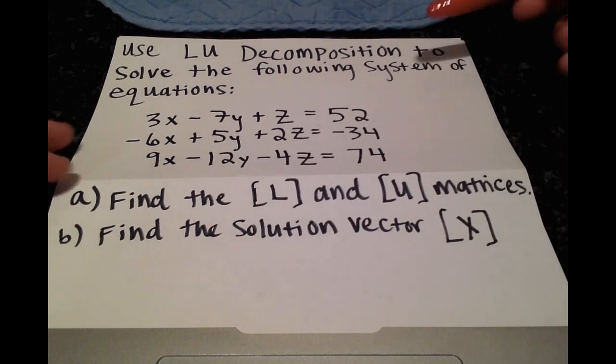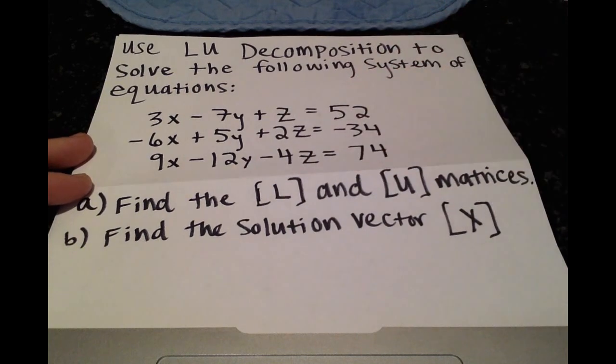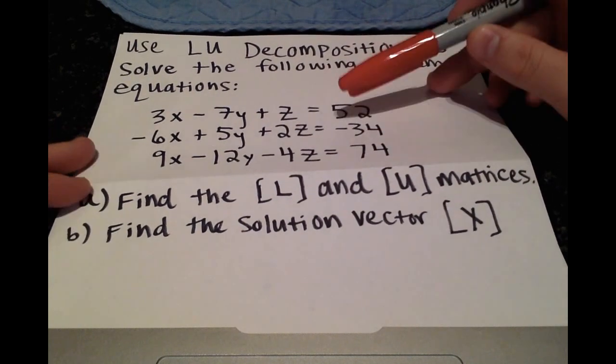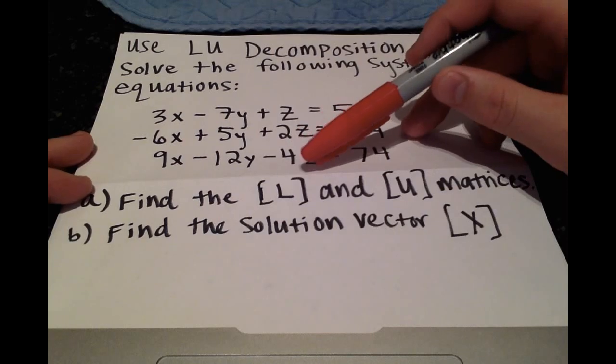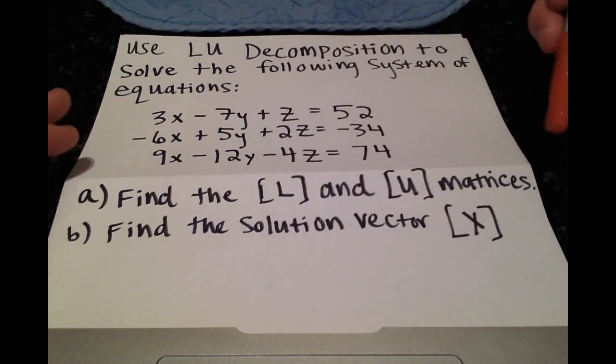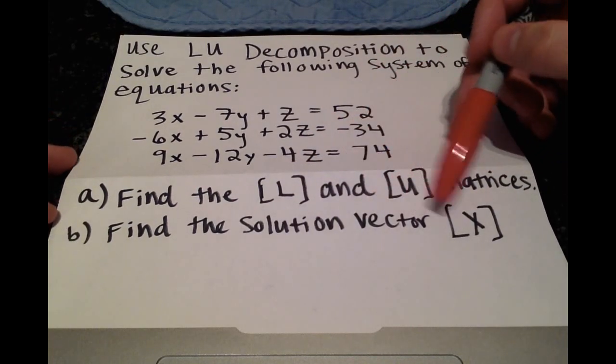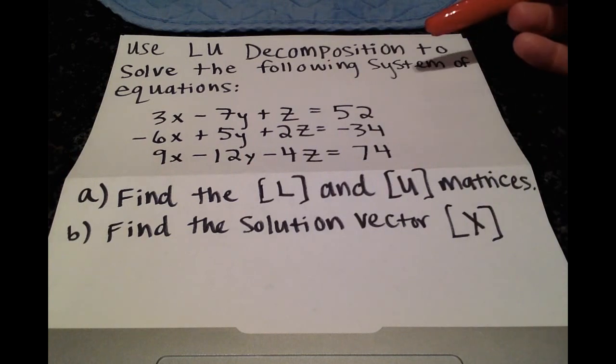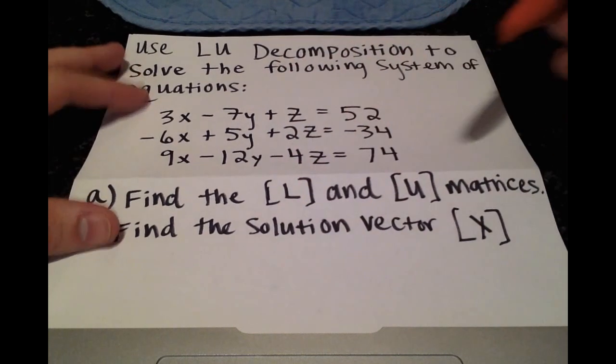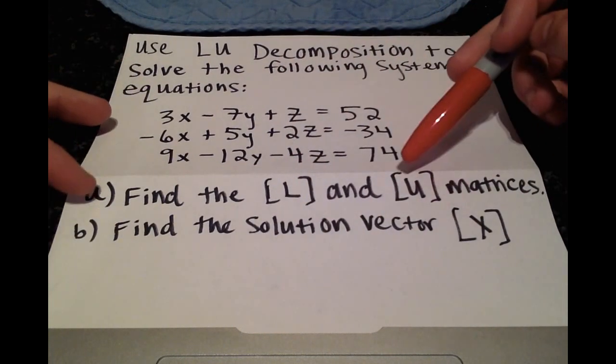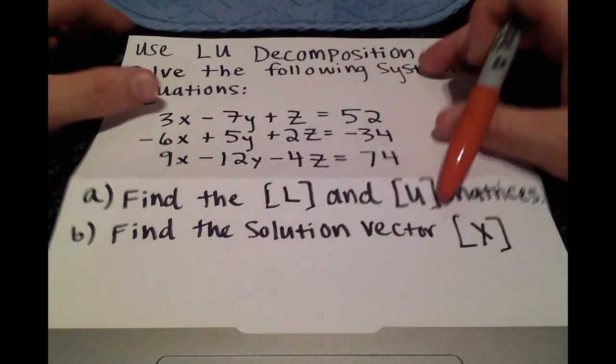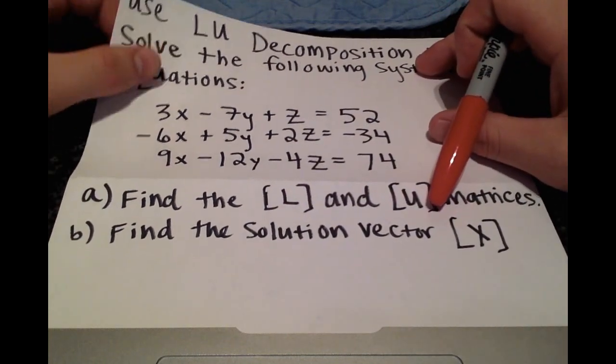So the problem says to solve this system of equations, and it has two parts A and B. Part A says find L and U matrices, and part B says to find the solution vector X. So in LU decomposition, we're going to be doing both of these anyways, but they split it up into two different parts, which you'll often see to get partial credit.